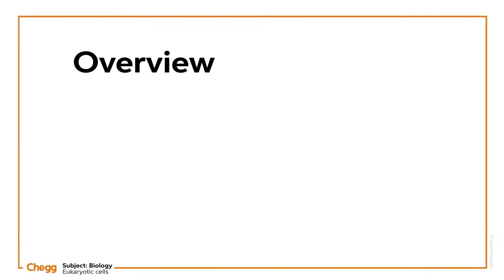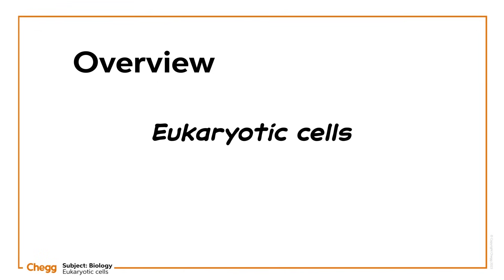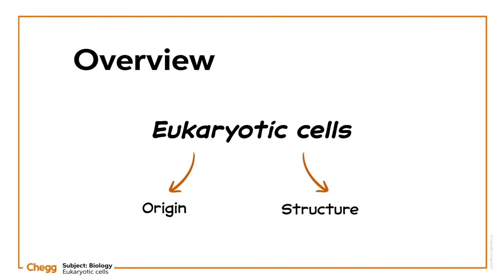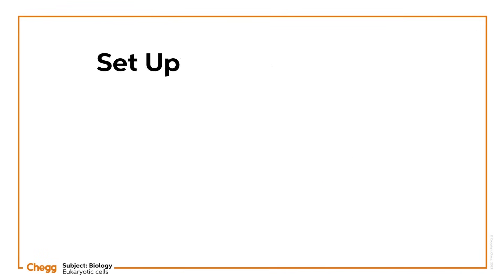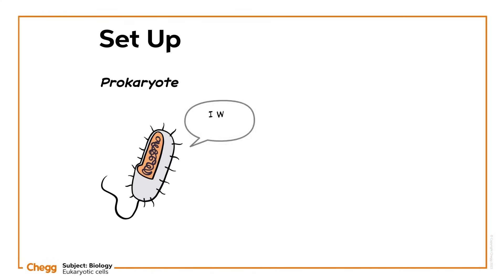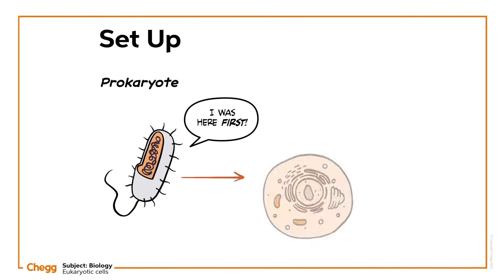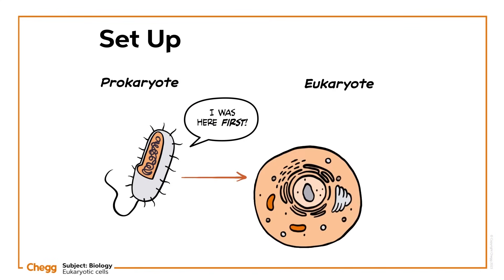In this video we'll be discussing eukaryotic cells. We'll talk about how they originated in the first place and their structure. The first life on earth was thought to be a single-celled prokaryote. But have you ever wondered how eukaryotic cells, the kind that humans are made up of, evolved?